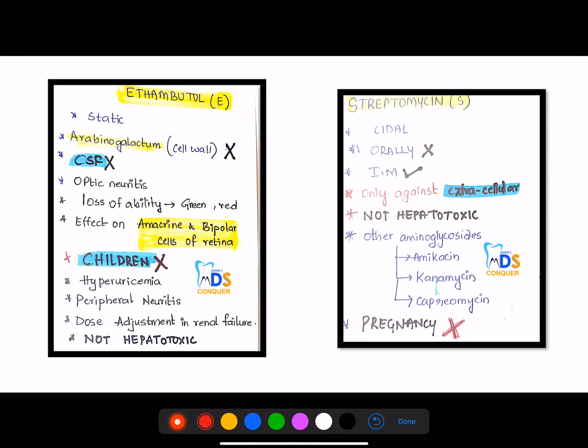Coming to ethambutol, this is a static drug. And here there will be inhibition of arabinogalactan which is present in the cell wall. And it cannot be seen in CSF. It can cause optic neuritis. Because of this, loss of ability to see green or red color, and it will have an effect on amacrine and bipolar cells of retina. This is very important.